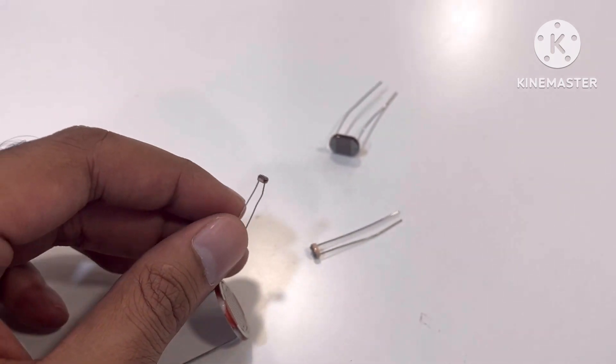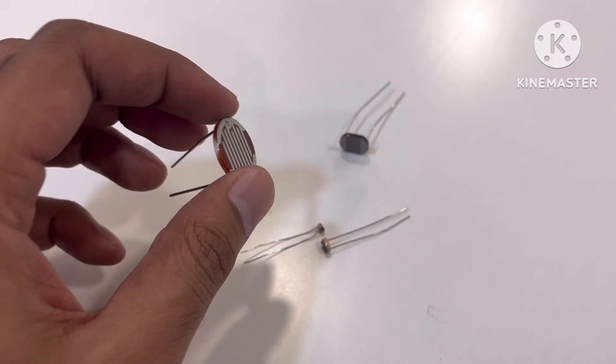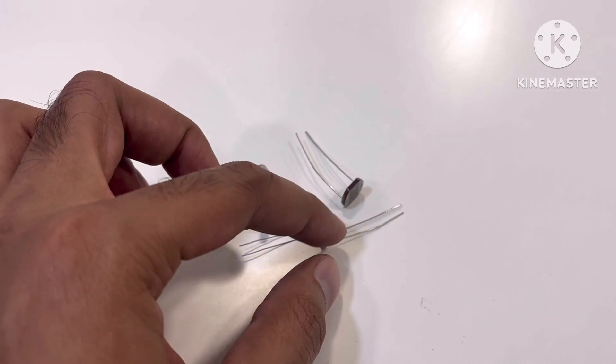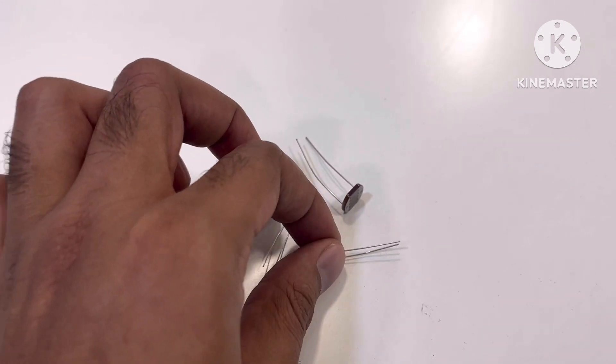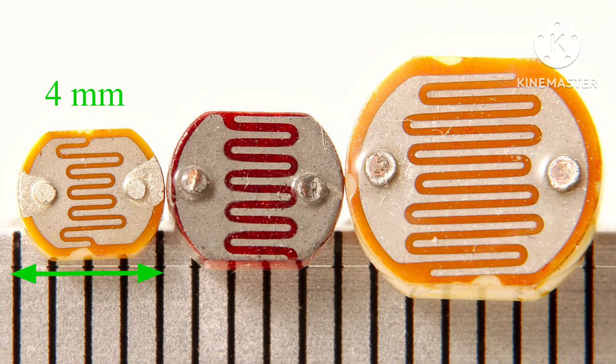LDR comes with different sizes. The applications are the same for all sizes of LDR. Just the difference in limit of resistivity and the power that it can handle. It's counted on millimeter scale. Here you can see some examples of different sizes of LDR.